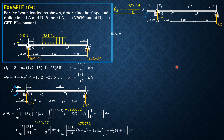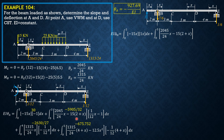Therefore, EI·δ_A equals the integral of (−15x)(1·x) dx — the moment due to the virtual unit load is 1·x, which is positive. Plus the integral from 0 to 3 of (2045/24·x − 15(2+x)) times (2+x − 7/6·x) dx for the second section.